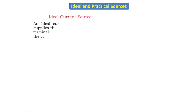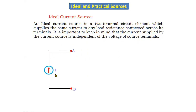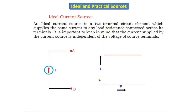Now let's see the ideal current source. An ideal current source is a two-terminal circuit element which supplies the same current to any load resistance connected across its terminals. It is important to keep in mind that the current supplied by the current source is independent of the voltage. The symbol of the ideal current source has two terminals and no resistance. In the characteristics, if you increase the voltage continuously, after a certain point the current is constant — it does not change irrespective of voltage changes.